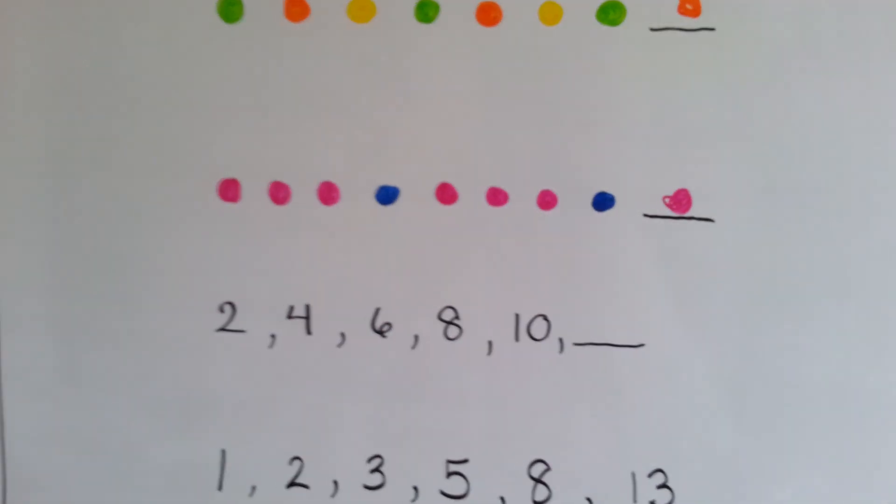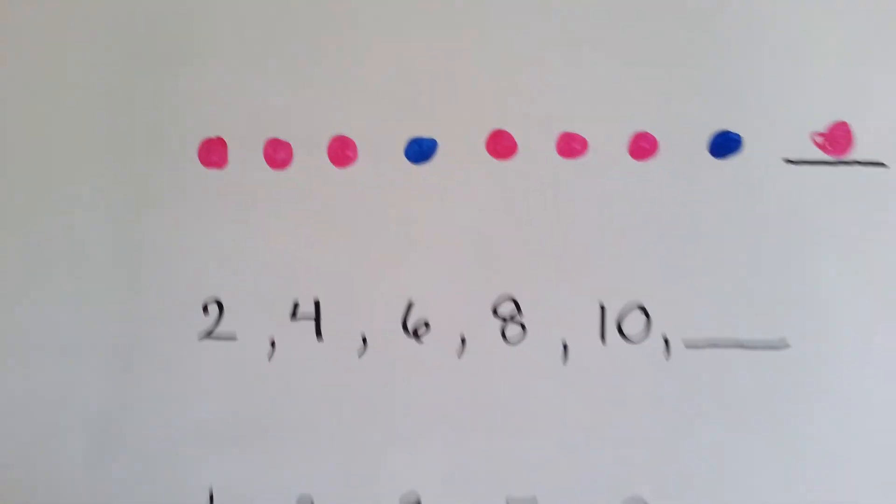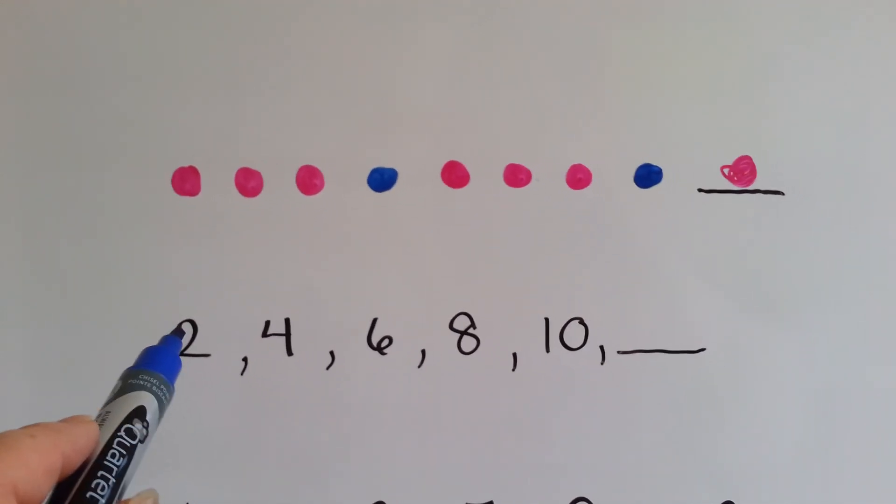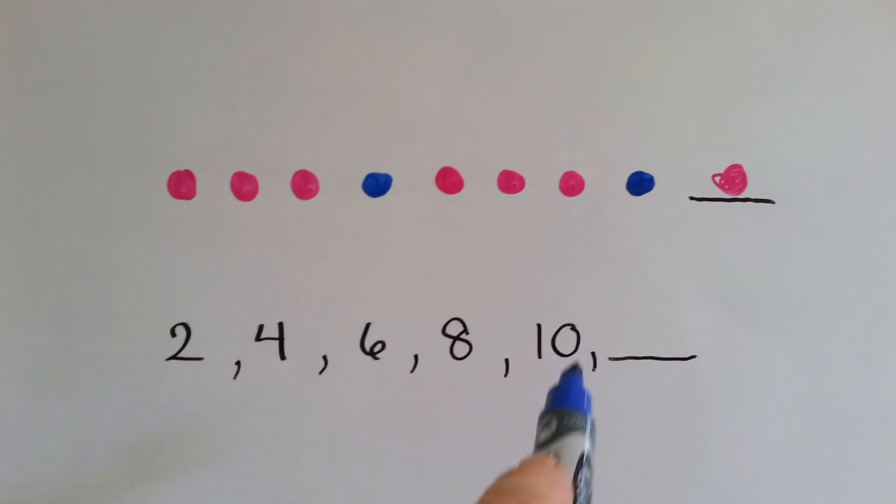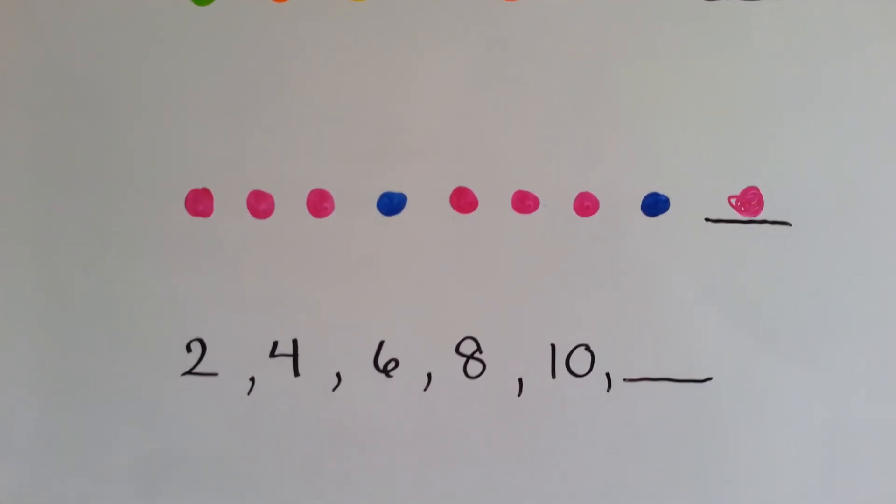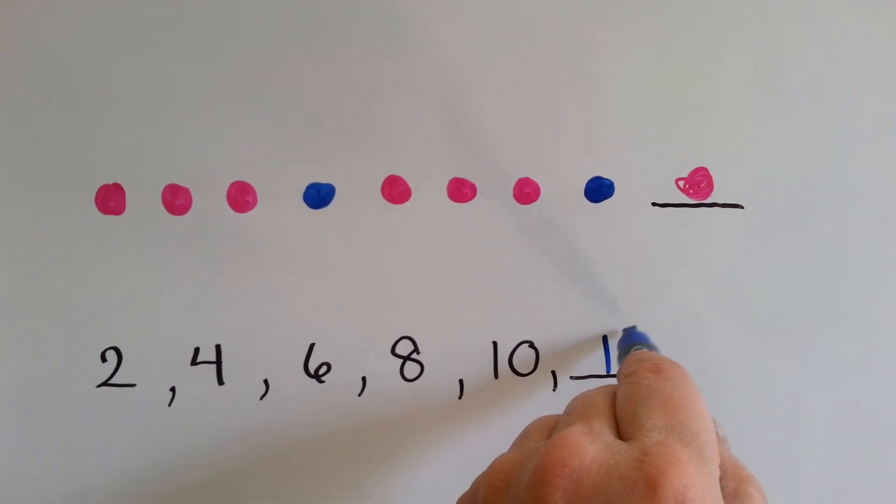Alright, now let's look at these. We've got number patterns, okay? What do you think is the next number for this one? 2, and then 4, and then 6, and then 8, and then 10. What do you think goes here? Well, if you saw that they were skip counting by 2's, and that the next one is 12, you're right.